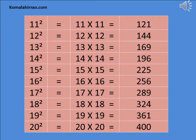16 square is equal to 16 multiplied by 16 is equal to 256. 17 square is equal to 17 multiplied by 17 is equal to 289.